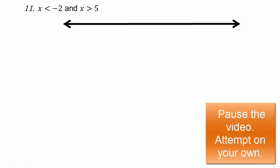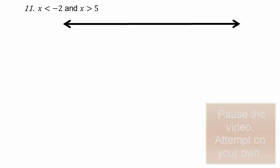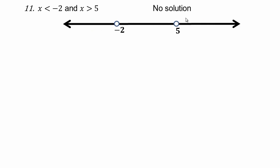Try that on your own. For negative 2 and 5: x smaller than negative 2 and x bigger than 5 — you can't be to the left of negative 2 and to the right of 5 simultaneously. So there is no solution.